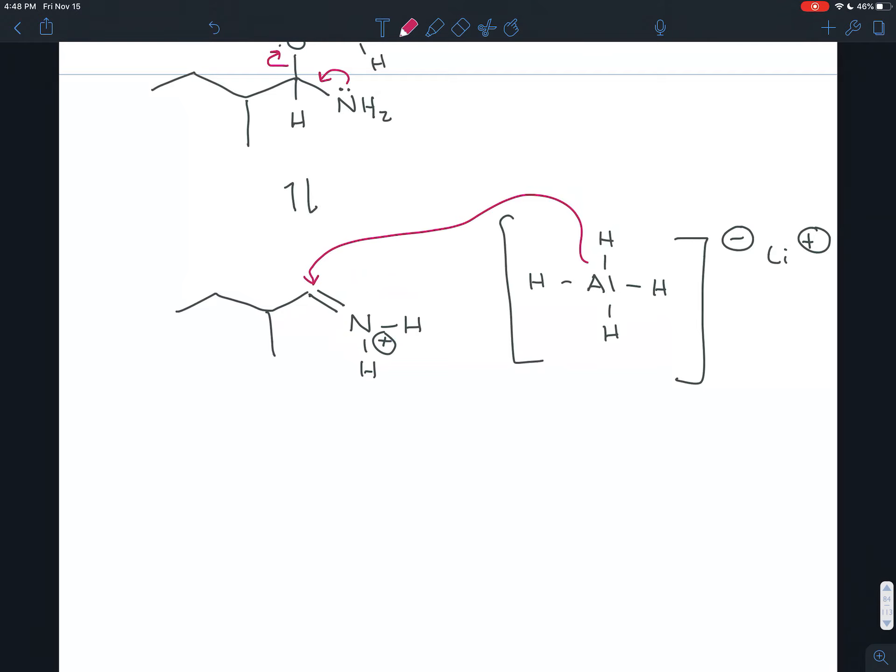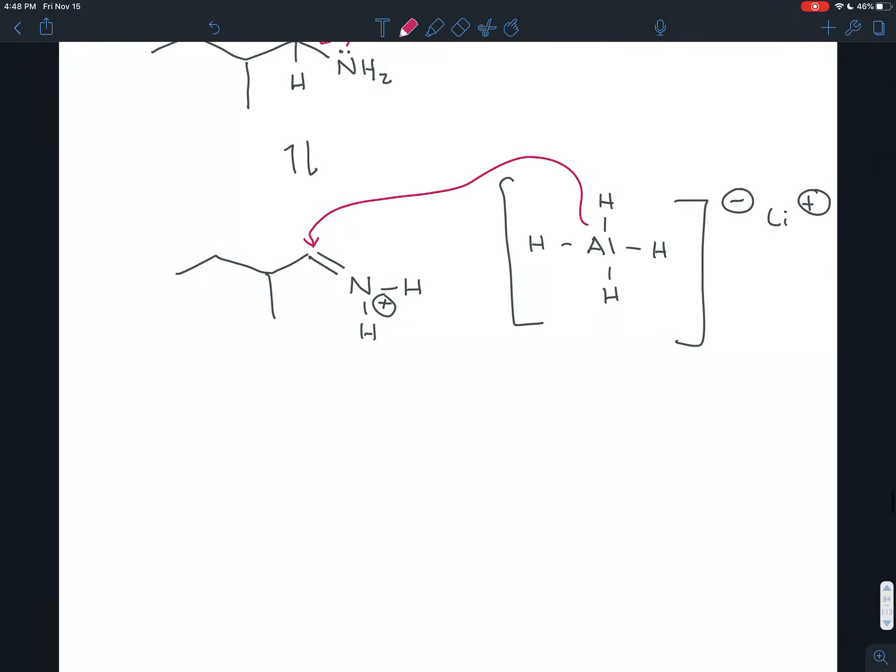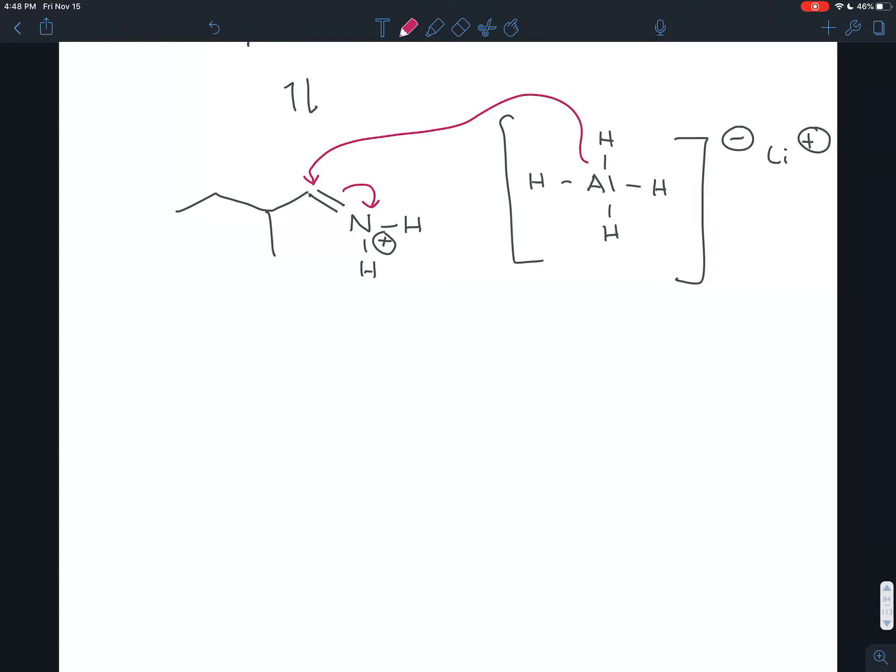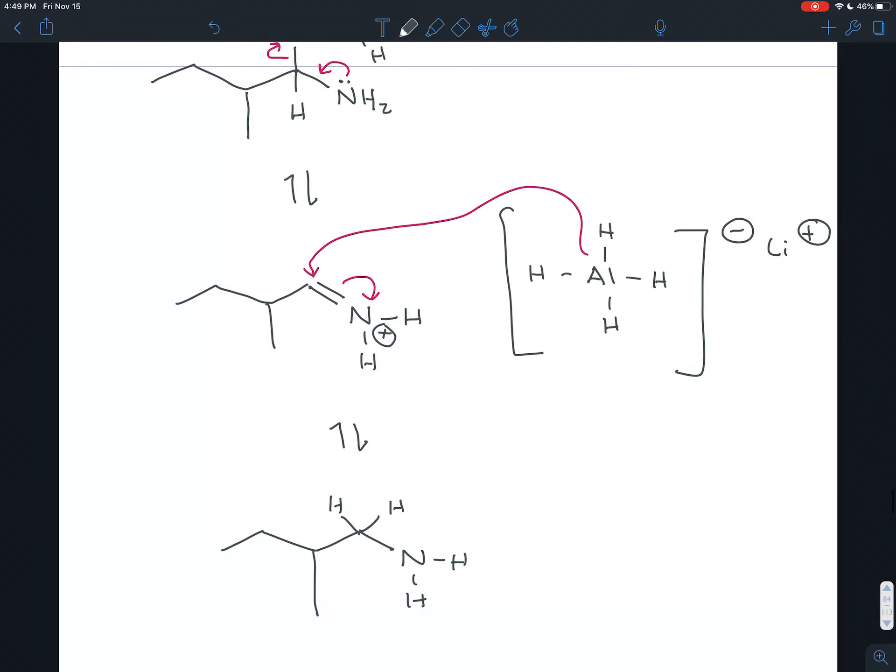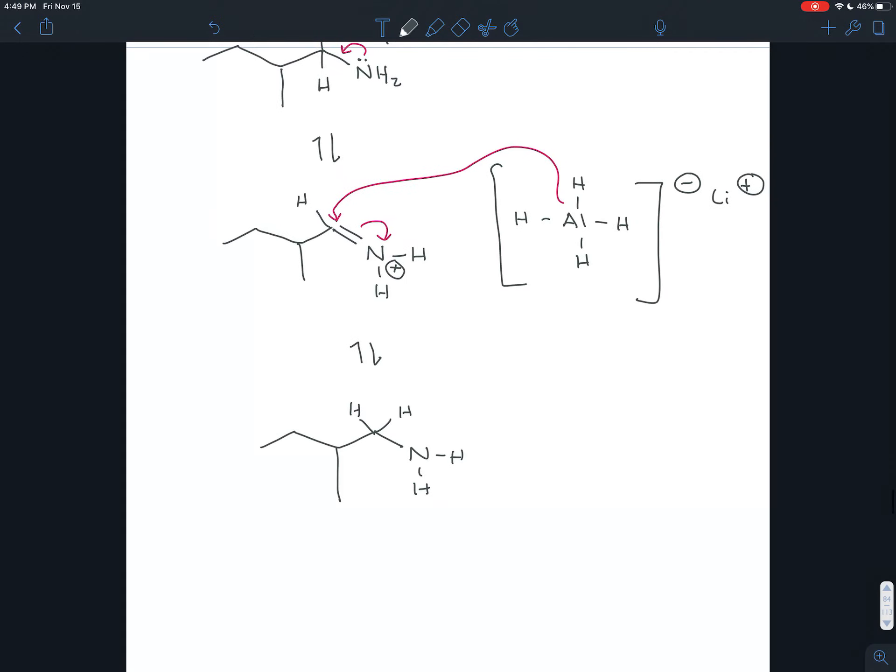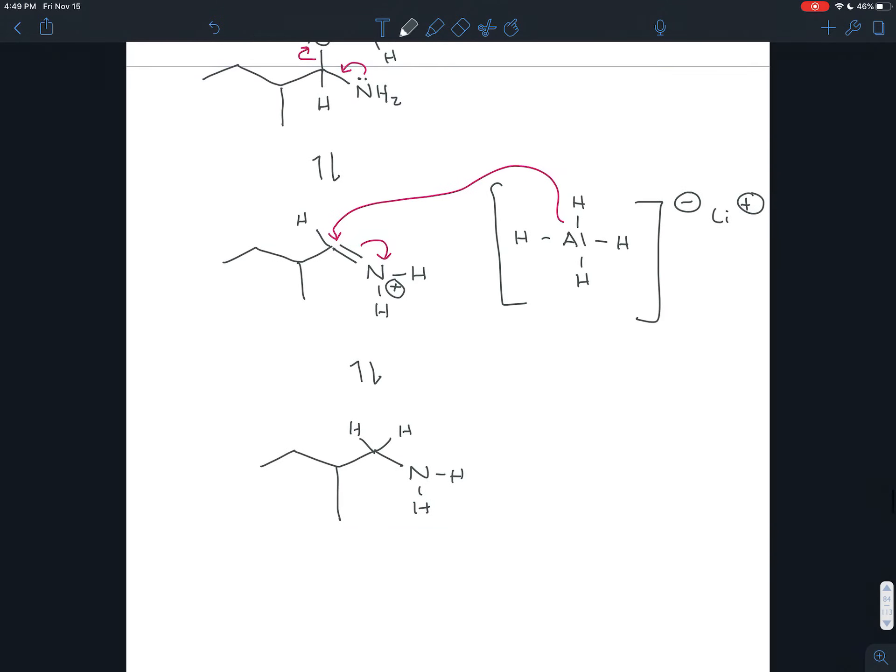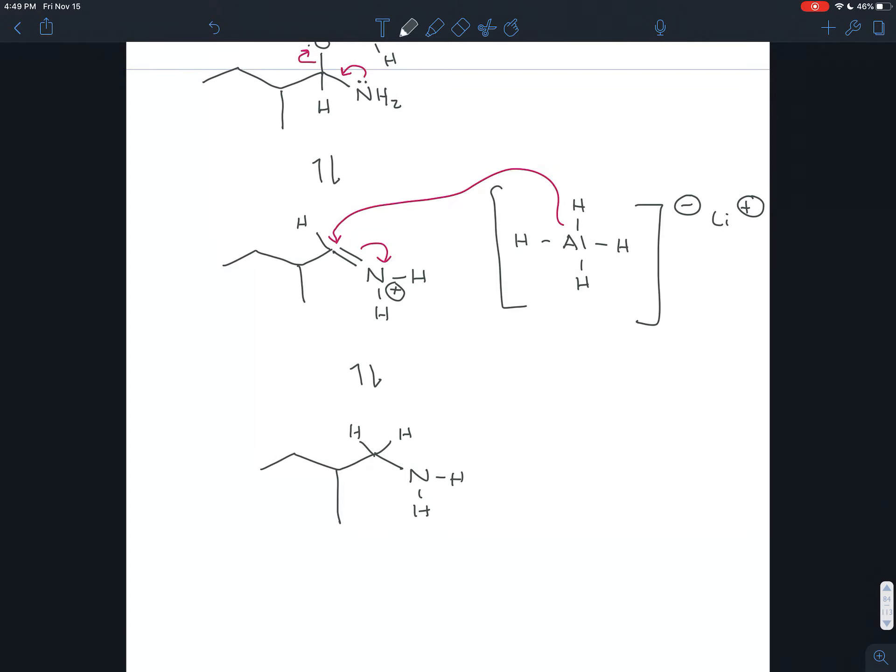That would kick those electrons up toward the nitrogen to help stabilize the positive charge there. And what we're left with is the amine, so the nitrogen with the two hydrogens. And we really ultimately added two hydrogens here. Remember, this hydrogen we added at first is still there in this intermediate. And in this we added this second one, so we added two hydrogens. We replaced the two bonds to oxygen with hydrogens. In other words, we reduced the molecule with lithium aluminum hydride, a strong reducing agent.